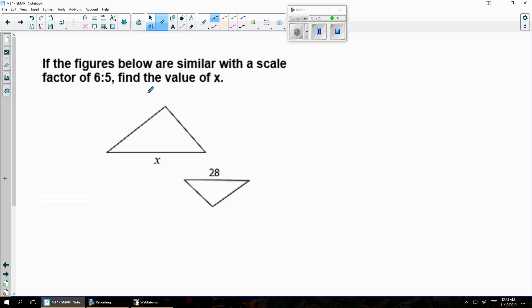All right, the next one says, if the figures below are similar with a scale factor of 6 to 5, find the value of X. Now, this triangle here, the one on top, this is the bigger triangle, and this is the smaller triangle. If it's 6 to 5, the bigger triangle needs to be on top. So that's going to be the X on top, or in the numerator. The 28 is on bottom, or in the denominator.